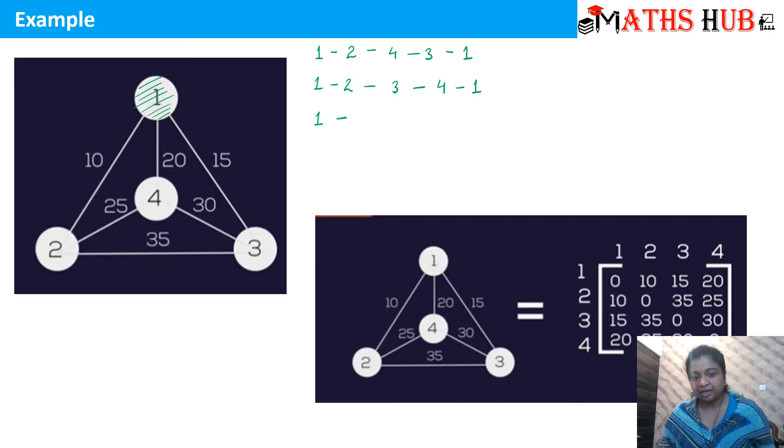The next path can be I can go from 1 to 3 and then I can either go to 4 or I can go to 2. If I am going from 1 to 3 and then from 3 to 4 then I need to go to 2 and then I need to go to 1. And if I am going from 1 to 3 then 3 to 2 then I need to go to 4 and then I need to go to 1.